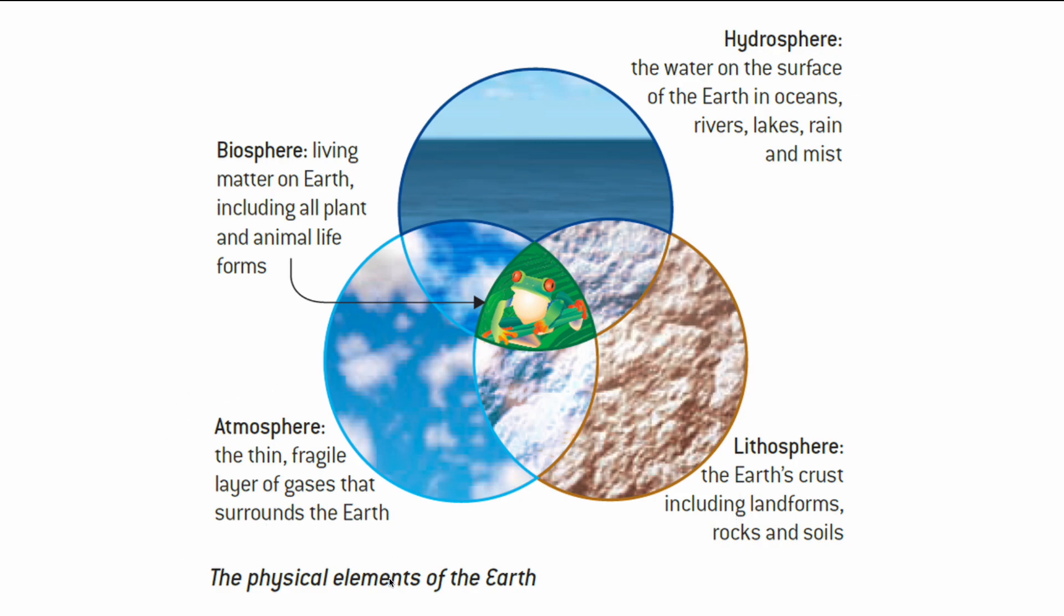Our atmosphere on the bottom left is all of the gases that surround the earth. We have gases like oxygen, carbon dioxide, nitrogen gas, and a few other gases within the atmosphere.